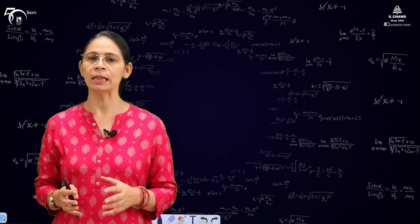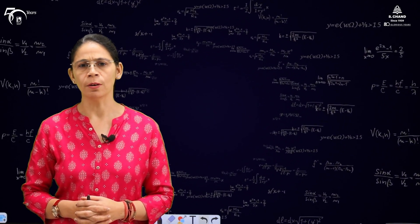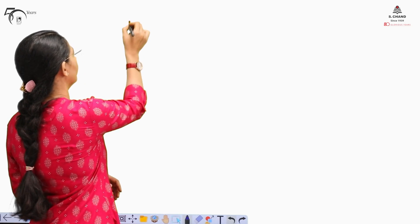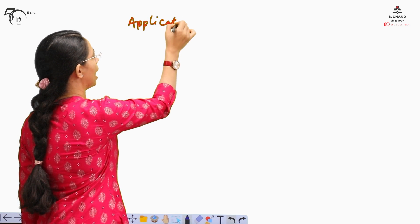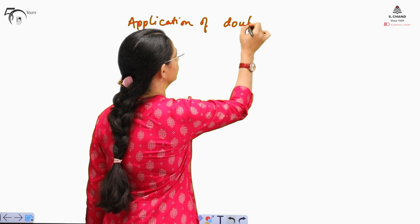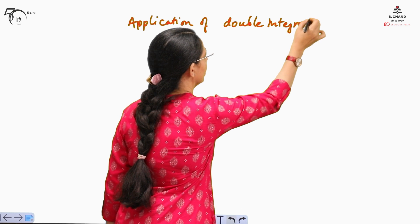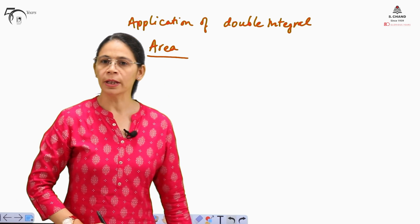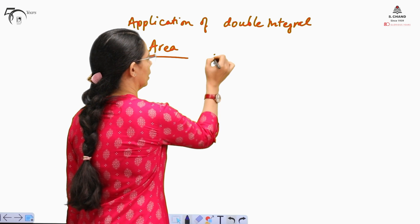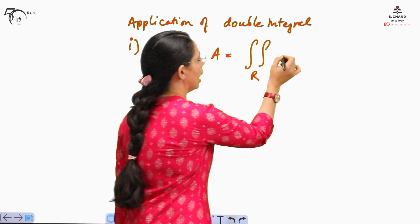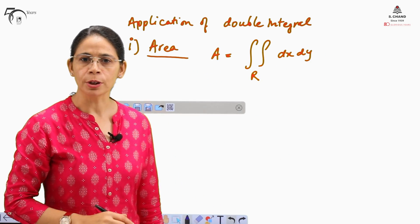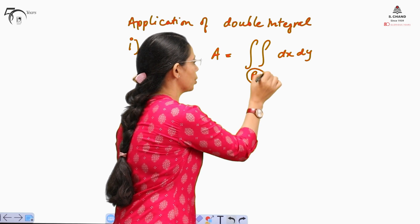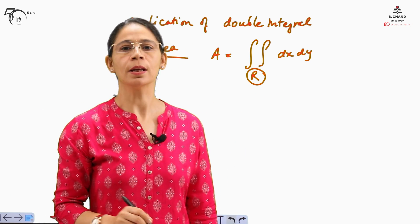Double integrals have a lot of applications in real life, and we will discuss a few of them here. The first application we will discuss is to find out the area of a curved region. To find out the area of any closed region, we integrate over the region R as dx dy. If we take f(x,y) equal to 1, then the double integral gives the area enclosed by the region of integration.